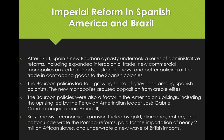Brazil also underwent a period of economic expansion and administrative reform in the 1700s, fueled by gold, diamonds, cotton, and coffee. This underwrote the Pombo reforms, paid for in part by the importation of nearly 2 million African slaves, and also a new wave of British imports. The Pombo reforms revised policies towards Indians — Pombo believed that whites and Ameri-Indians should mingle, encouraged marriage between the two, particularly between white men and Ameri-Indian women, and gave men access to public offices to integrate the two societies. The Jesuit villages were converted into parishes or small towns called villas.